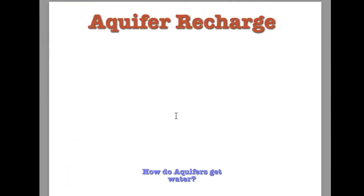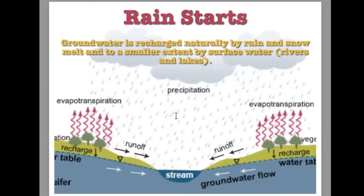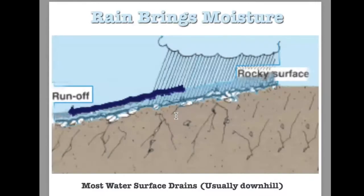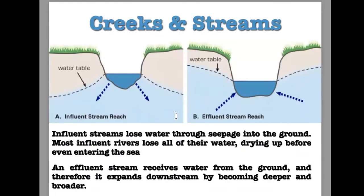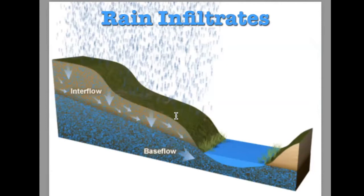How do aquifers get their water? We call it aquifer recharge, and it comes from deep drainage or deep percolation — a hydrological process where water moves downward from the surface deeper into the ground. It's naturally recharged by rain, snowmelt, and to a smaller extent by lakes and rivers. In some areas, creeks and streams will feed the water table or aquifer underground. When water is leaving a stream or creek, it's called an 'in.' Water table formation is when water seeps down until it reaches the water table — a nice picture showing water infiltrating and getting down into the ground, with the water table relatively high, poking up and showing a little pond or river.